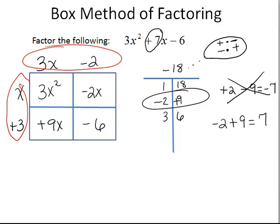We simply rewrite our factors. So in this case our answer becomes 3x minus 2 times x plus 3. Again I encourage you to use the FOIL method to multiply to check and verify that the answer is indeed 3x squared plus 7x minus 6.